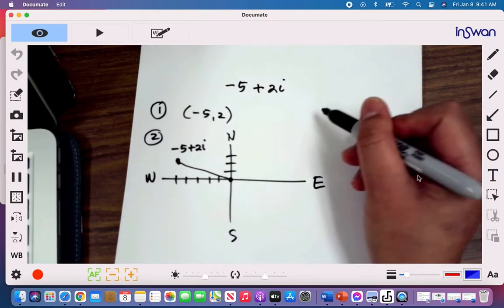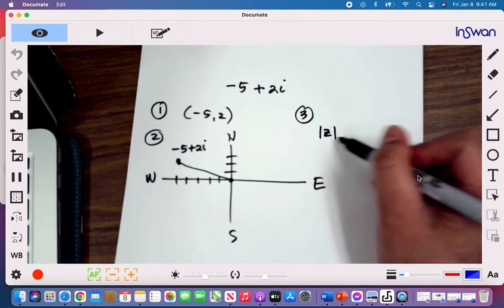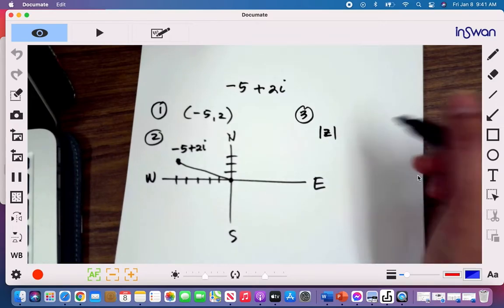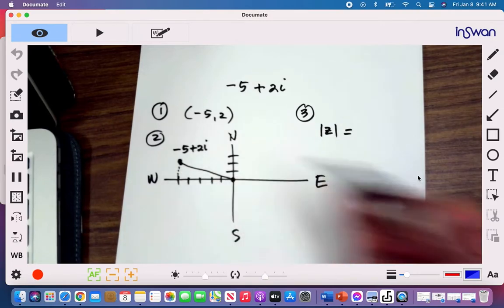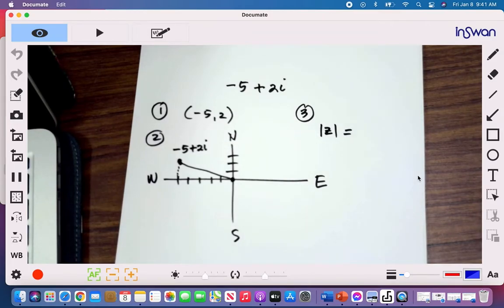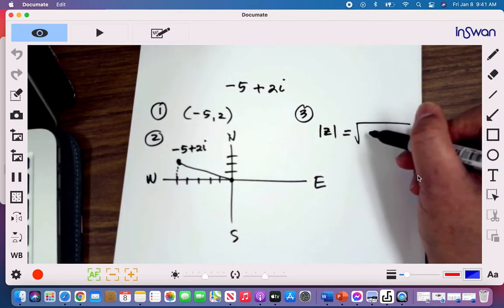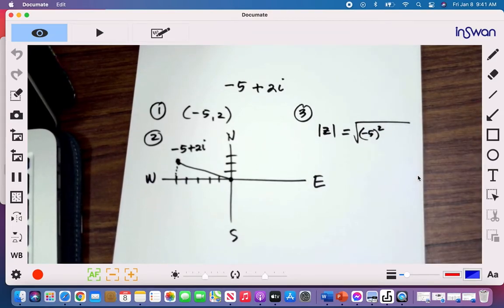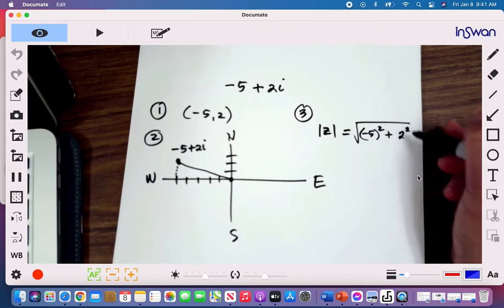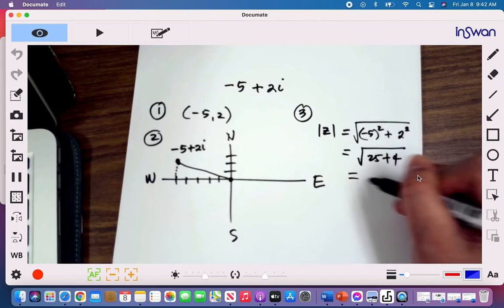So our second procedure is to find the magnitude. That's the symbol. It's just two vertical lines enclosing z. By using the Pythagorean theorem. Why are we doing that? Because if you follow a line here, the line connecting our two points will create a right triangle. And so therefore, to find the length of that line, we can use Pythagorean theorem. So that will be the square root of negative 5 square. Notice we always enclose our negative inside the parenthesis because without it, it'll give us a negative value. And remember, the distance is always positive. So plus 2 square. So this gives us the square root of 25 plus 4. And that's the square root of 29.